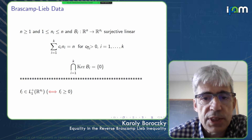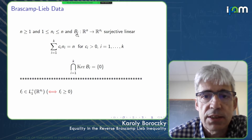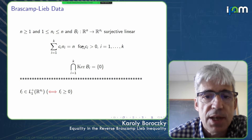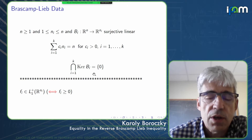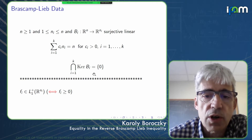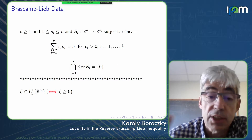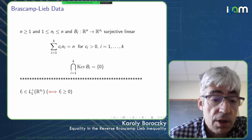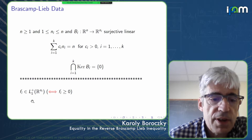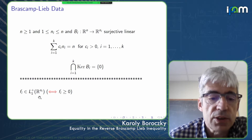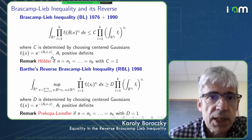The Brascamp-Lieb data is a set of these surjective linear maps and positive coefficients such that a linear combination with those positive coefficients of the n_i's equals n. We also have the condition that the intersection of the kernels should be trivial — a kind of frame condition for those unfamiliar with frames. We then use non-negative L^1 functions on R^{n_i}.